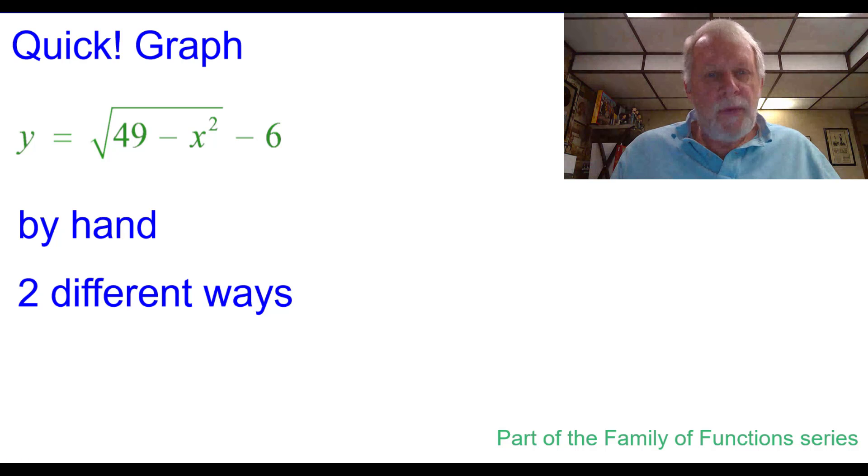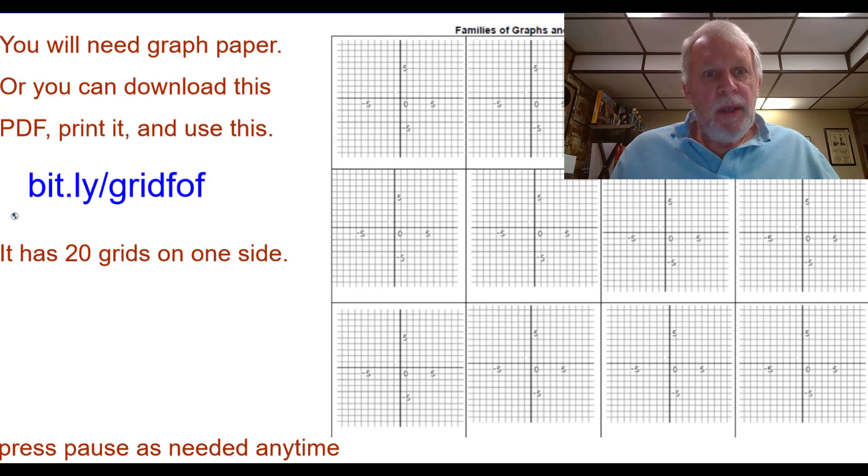Graph y equals the square root of the quantity 49 minus x squared minus 6 by hand in two different ways, part of the family of functions series. You will need graph paper or you can download this PDF and print it. Press pause as needed at any time.